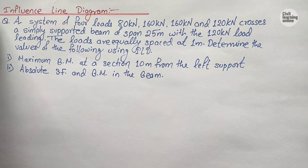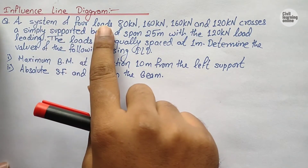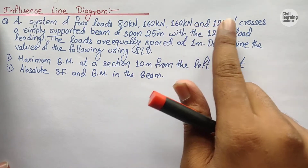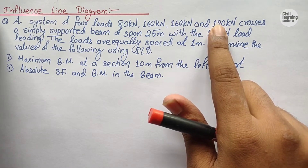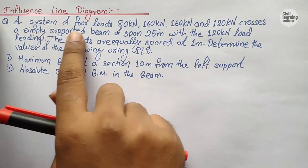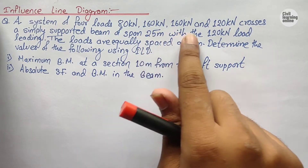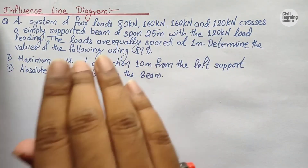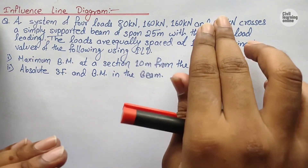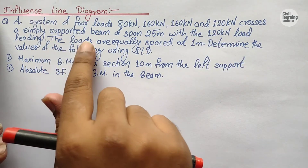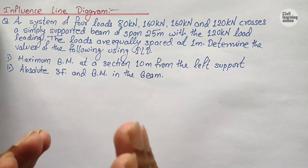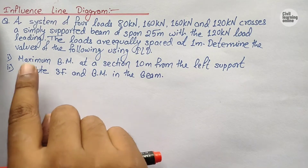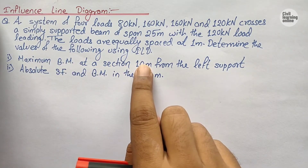Let us go through the question first. The question says: a system of four loads — 80 kN, 160 kN, 160 kN, and 120 kN — crosses a simply supported beam of span 25 meters, with the 120 kN load leading, meaning the load is moving from left to right. The loads are equally spaced at 1 meter. Determine the following using the influence line diagram: first, calculate the maximum bending moment at a section 10 meters from the left support.